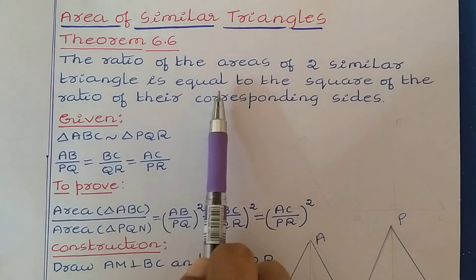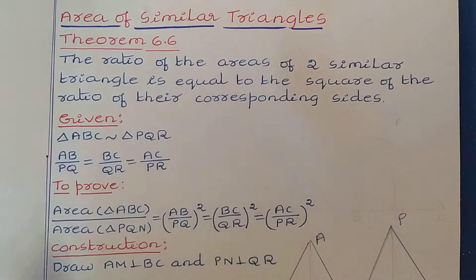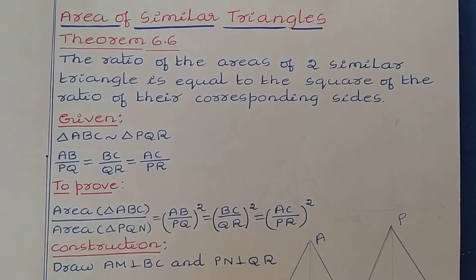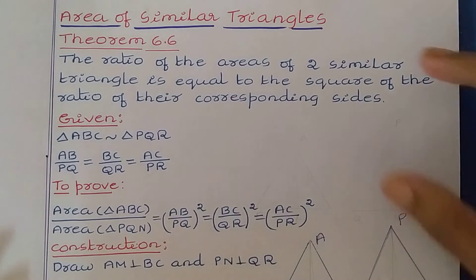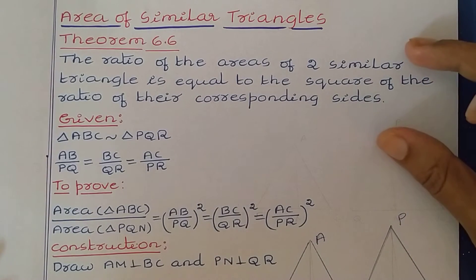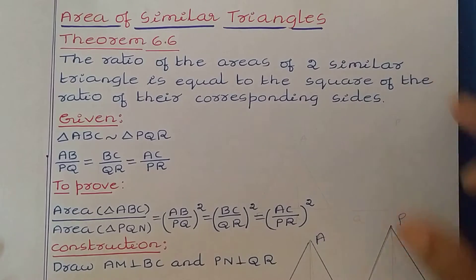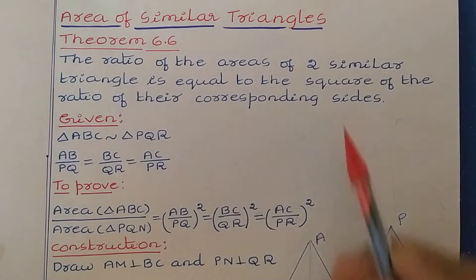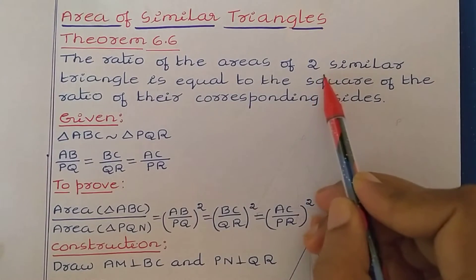Let us see the definition of the theorem. The ratio of the areas of two similar triangles is equal to the square of the ratio of their corresponding sides. Here in this definition, they are talking about two triangles.